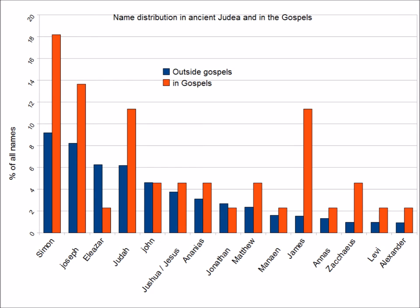In other words, our criteria for Jesus being a historical figure would have been met. As this is the simple and most obvious interpretation of what we have observed about name distributions in the Gospels, I conclude that this onomastic argument does indeed favour historicity.